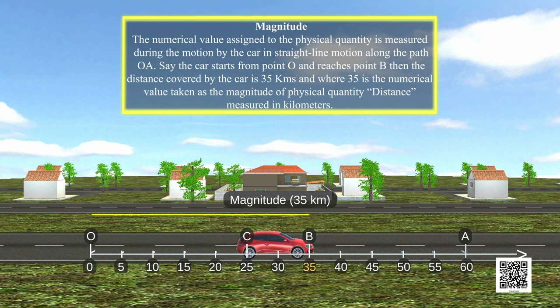And where 35 is the numerical value taken as the magnitude of physical quantity, distance measured in kilometers.